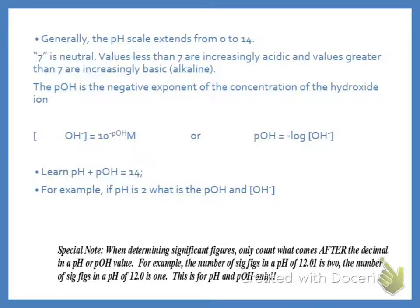When we're talking about the pH scale, it goes from 0 to 14. 7 is neutral. Remember, less than 7 is an acid, and greater than 7 is a base.